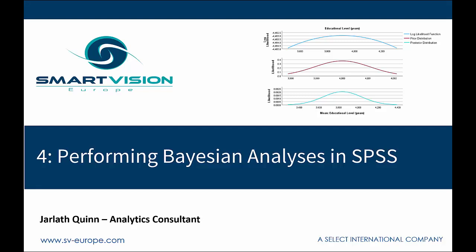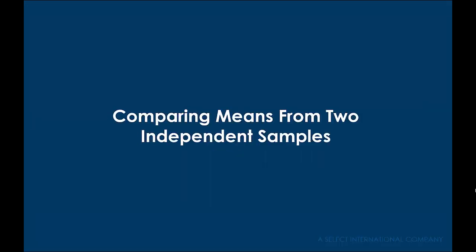This is part 4 of Bayesian analysis with SPSS, in which we will be looking at how we perform Bayesian analyses within the system. To begin with, we're going to be looking at a Bayesian example to compare means from two independent samples.